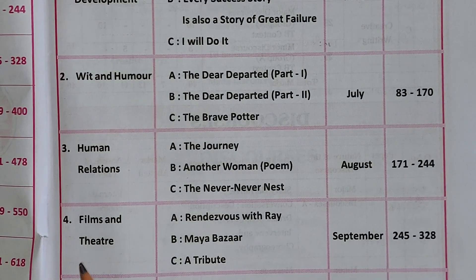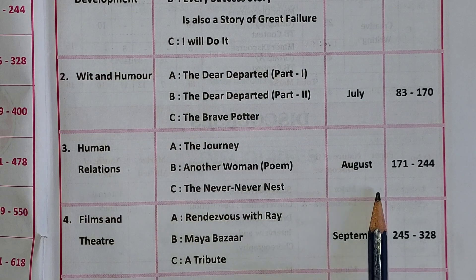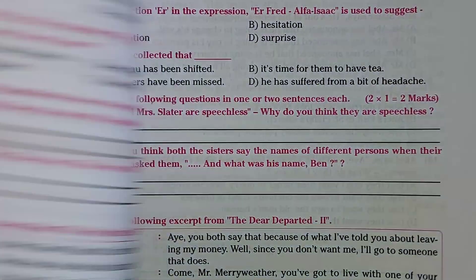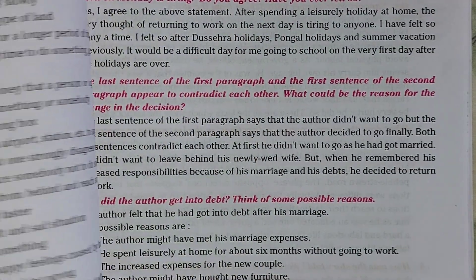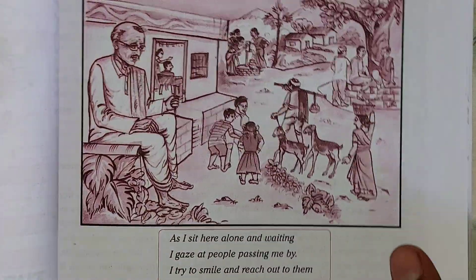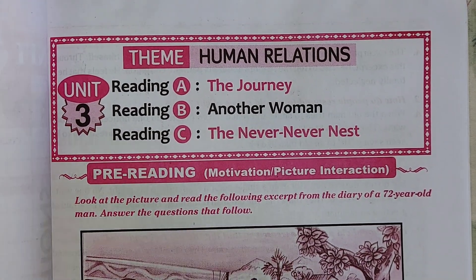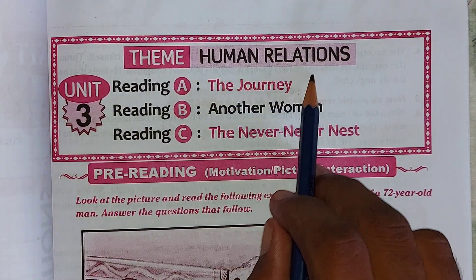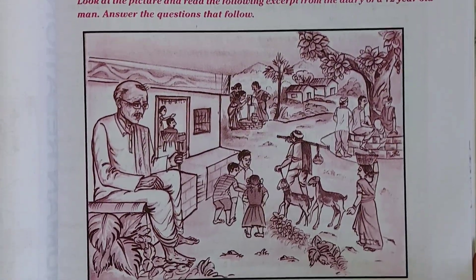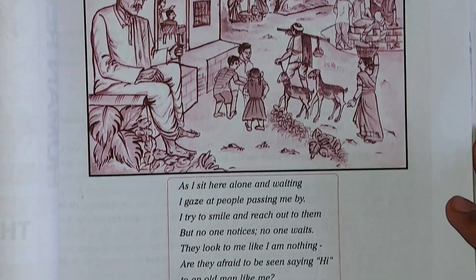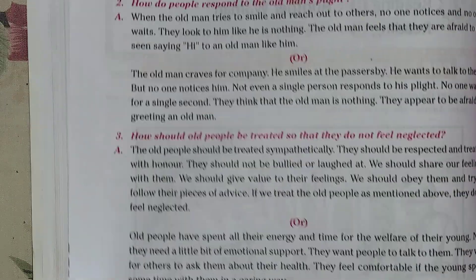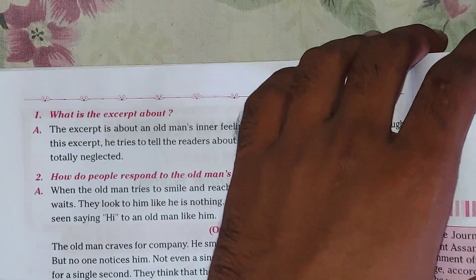You can see page number 171. The theme is Unit 3 - Women Relations, Reading: The Journey. After that we have a picture in your textbook, followed by some questions. First we will see those question answers.